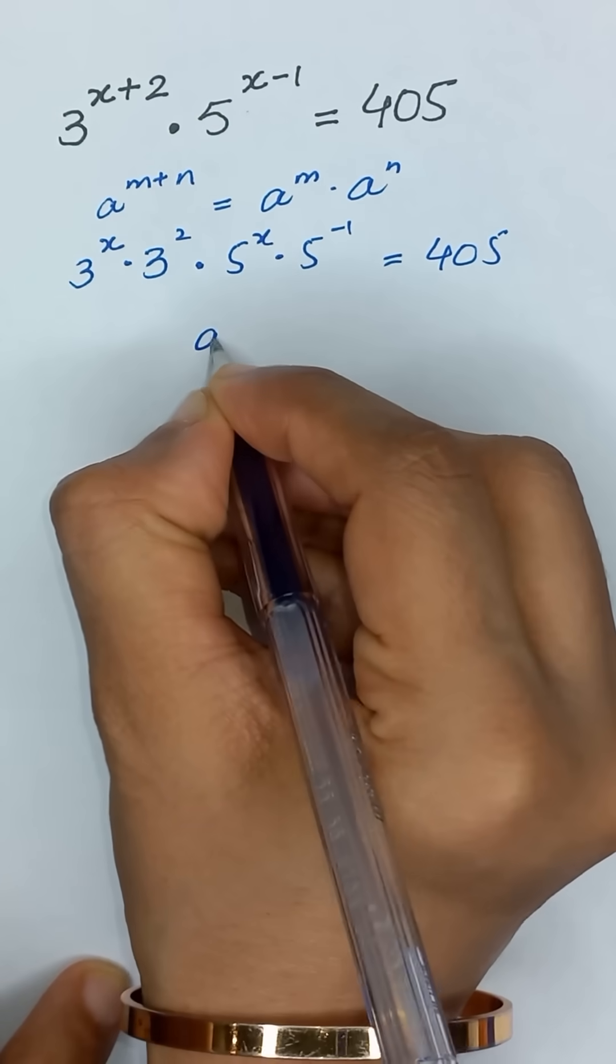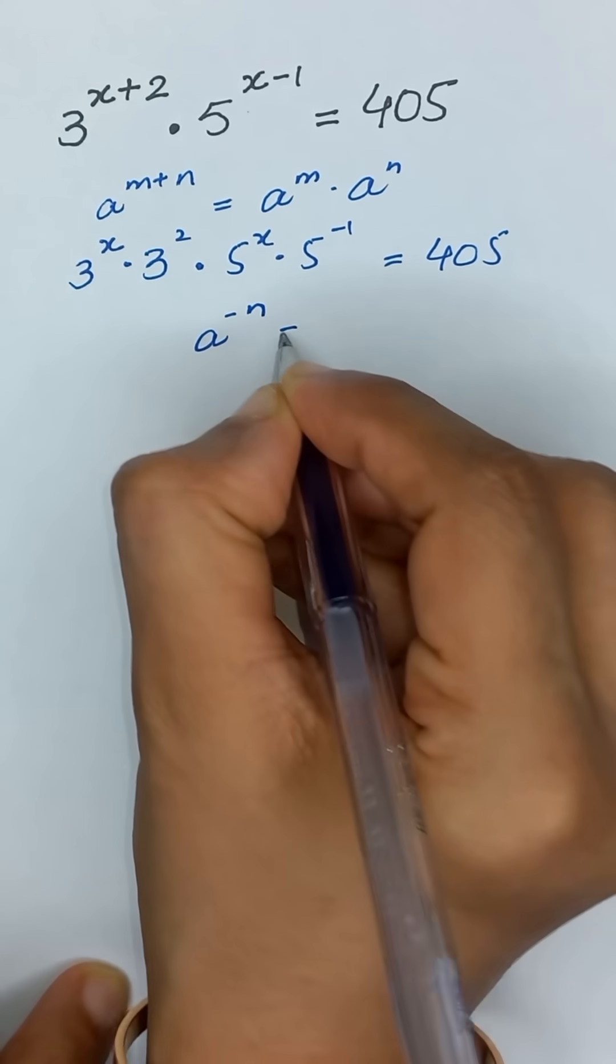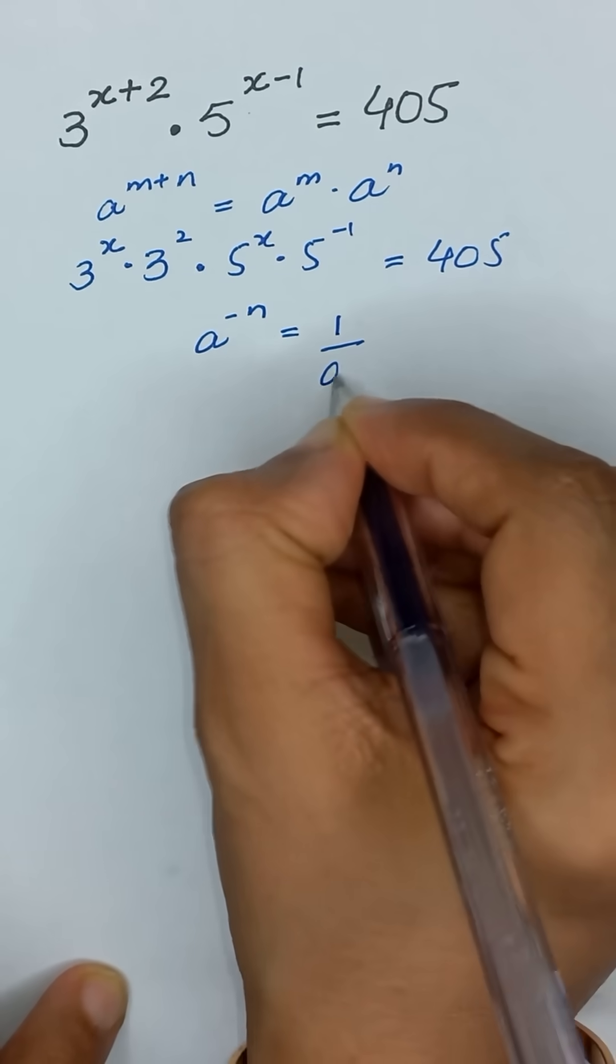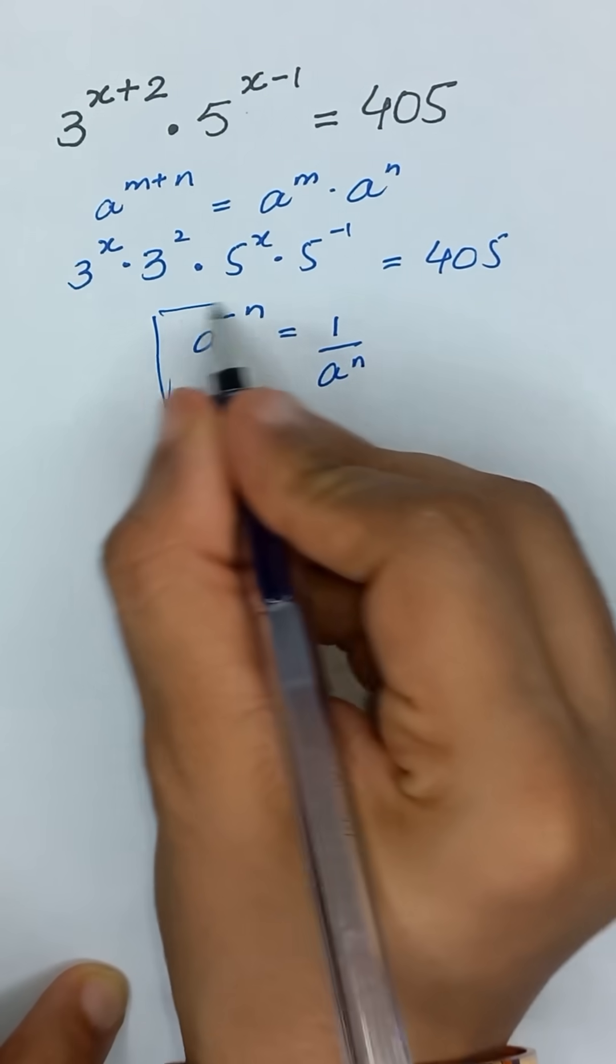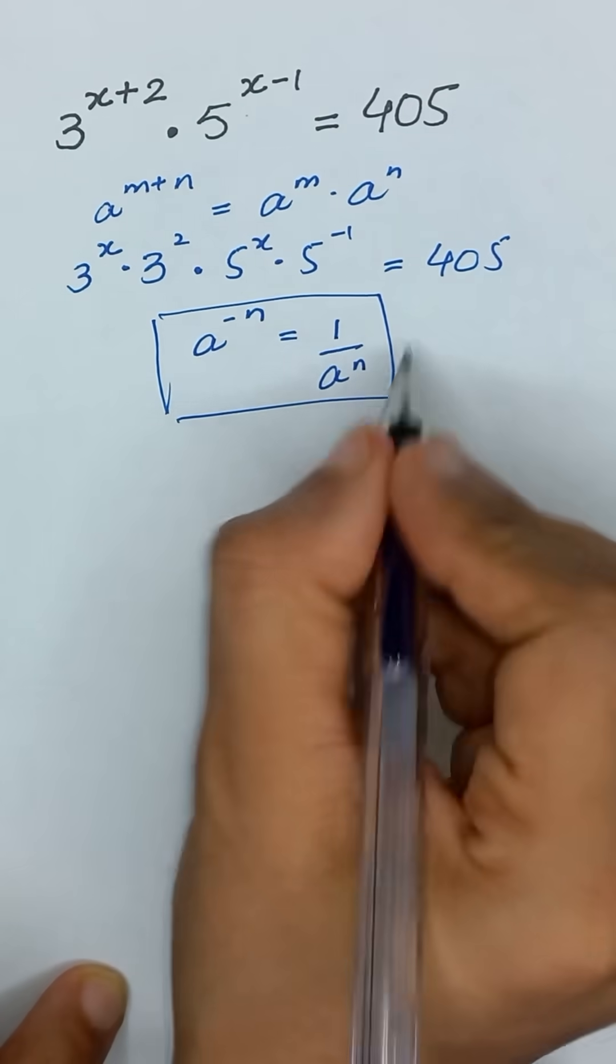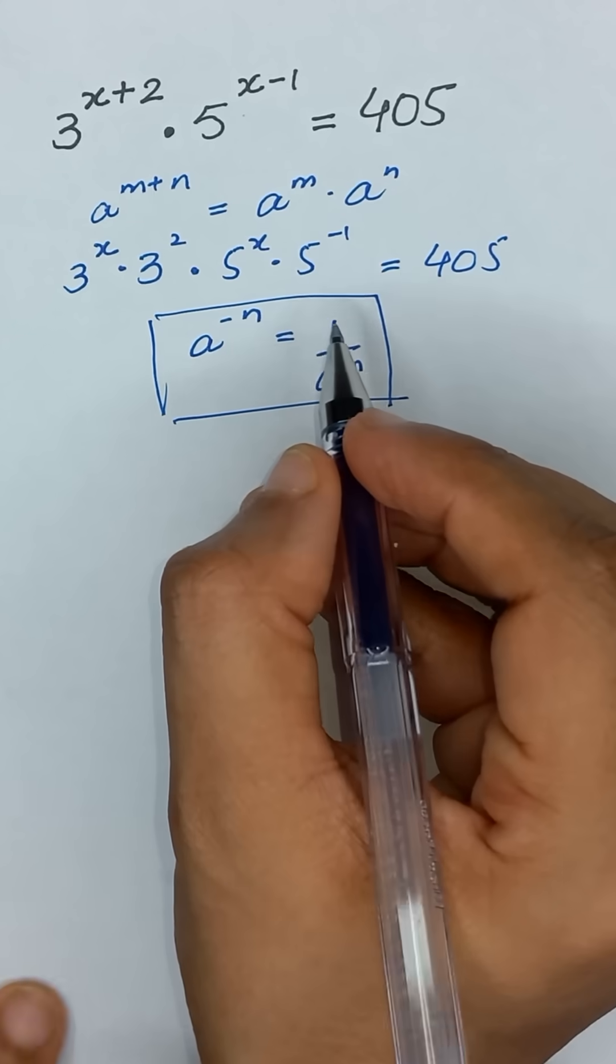Now, a to the power minus n can be written as 1 divided by a to the power n. We will use this rule on the term 5 to the power minus 1.